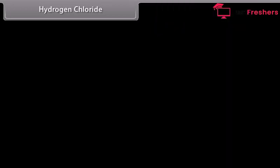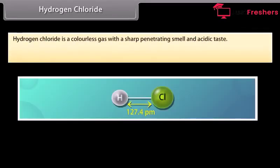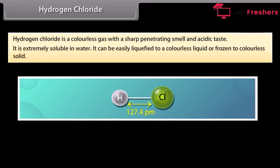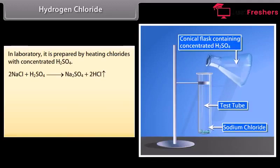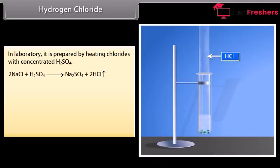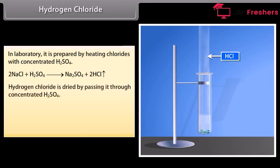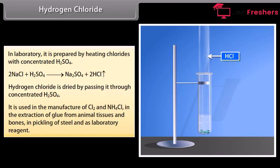In 1648, Glauber obtained hydrogen chloride by heating common salt with concentrated sulfuric acid. It is a colorless gas with a sharp penetrating smell and acidic taste. It is extremely soluble in water — one volume of water dissolves about 450 volumes of hydrogen chloride under ordinary conditions. It can be easily liquefied to a colorless liquid or frozen to a colorless solid. In the laboratory, it is prepared by heating chlorides with concentrated H2SO4, and dried by passing through concentrated H2SO4. It is used in the manufacture of Cl2 and NH4Cl, in extraction of glue from animal tissues, pickling of steel, and as a laboratory reagent.